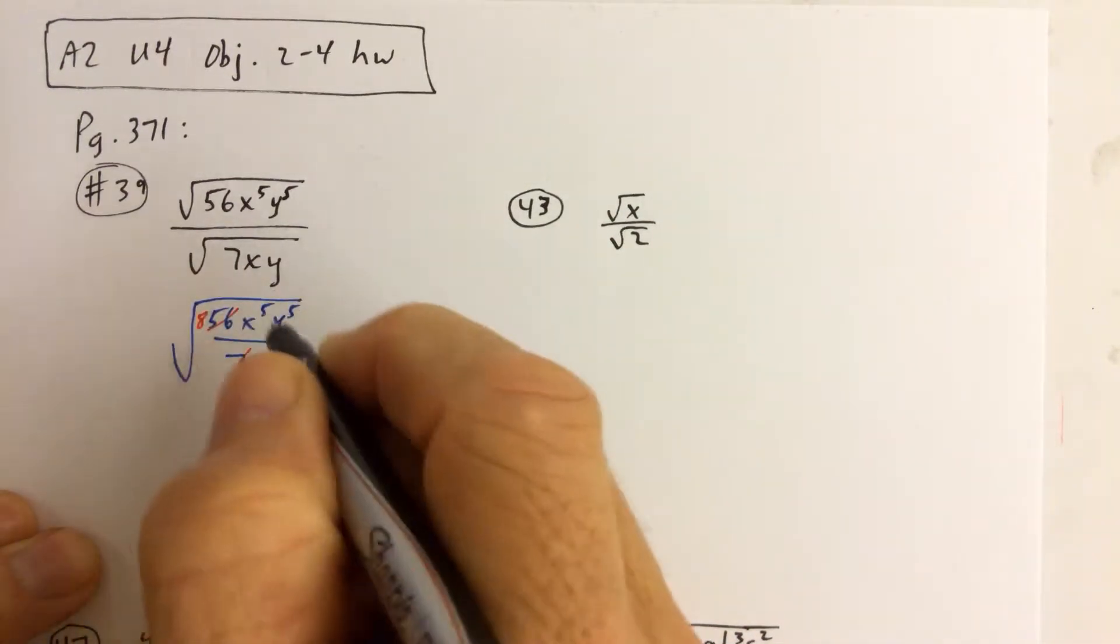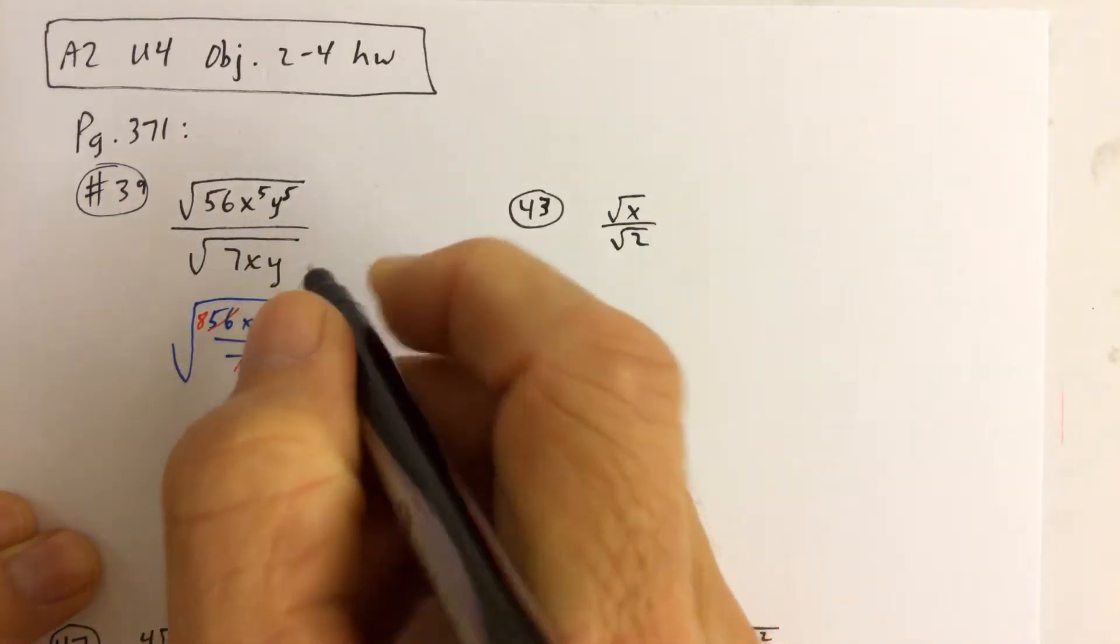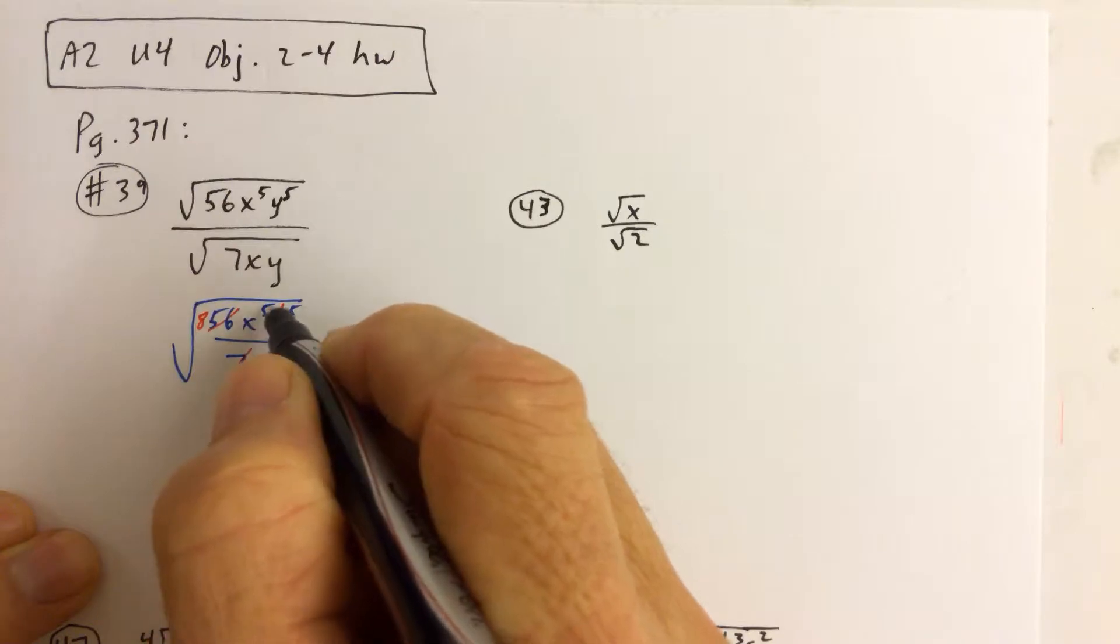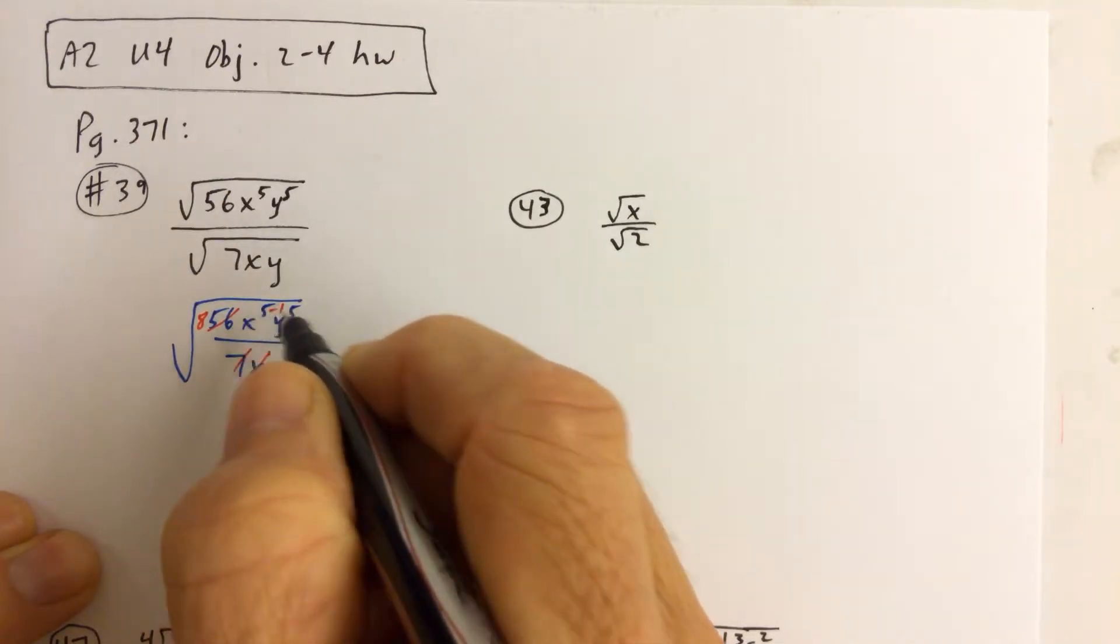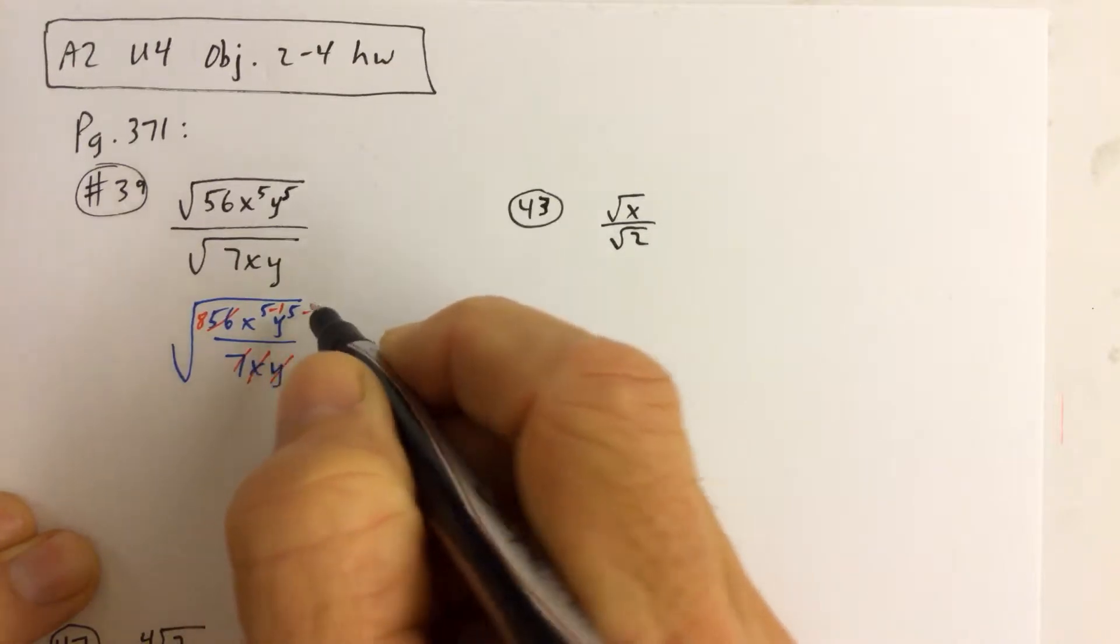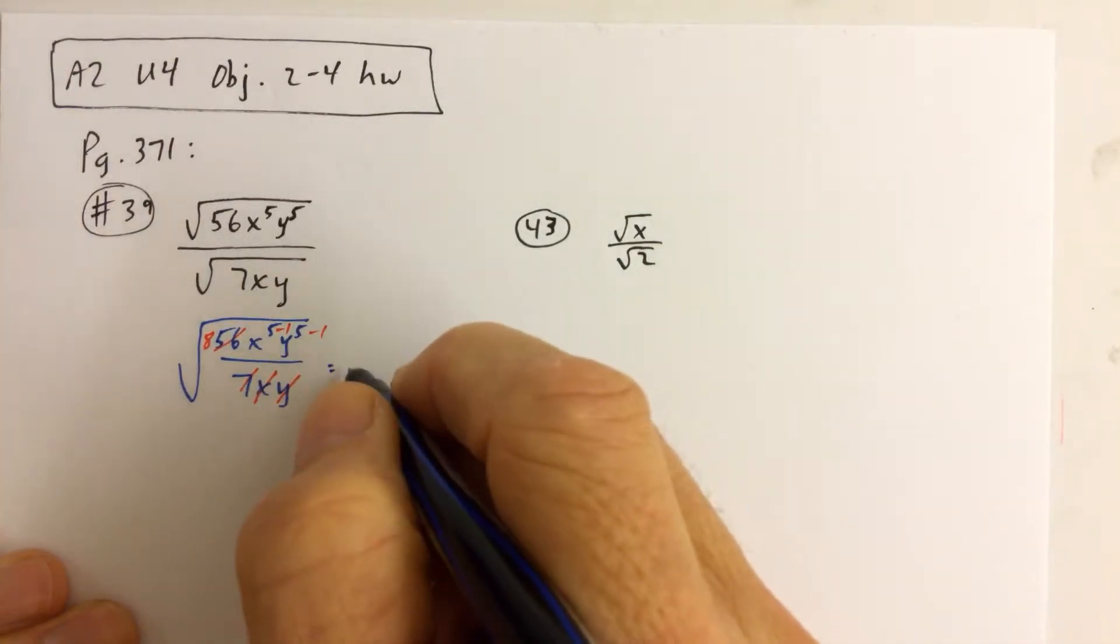7 goes into 56 eight times. We're going to cancel 1x down there, so we're going to subtract 1 from the exponent of 5. So instead of x to the fifth over x, it'll be x to the fourth up there. Same thing with the y. We're going to subtract 1 from that. So we get, when all the dust settles,